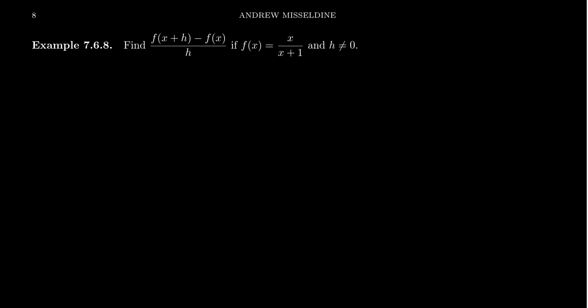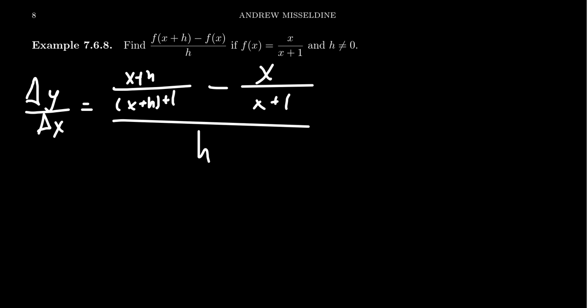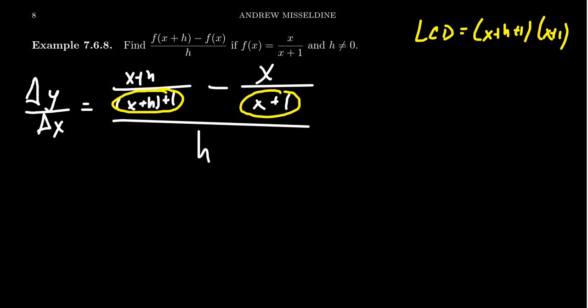These fractional ones can be a little tricky, so let's do another example. Find the average and instantaneous rate of change of f(x) = x/(x+1). We always start with the average rate of change. We can't plug in h = 0 yet — that happens at the very end. So f(x+h) gives us (x+h)/(x+h+1), and we subtract f(x) = x/(x+1), all over h. The LCD of the baby fractions is (x+h+1)(x+1), and we multiply the top and bottom by that LCD.